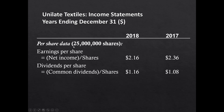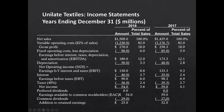Per share data: with 25 million shares outstanding in both years, earnings per share is net income divided by shares — $2.16 in 2018 versus $2.36 in 2017, so EPS went down. Dividends per share was $1.16 paid in 2018 versus $1.08 in 2017 — that's dividends paid divided by 25 million shares.